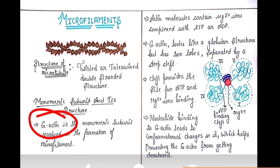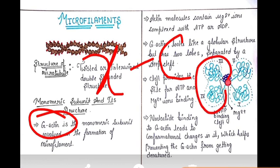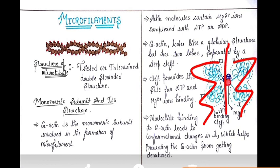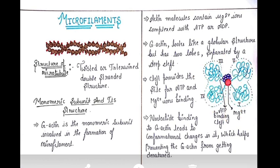If we see the G-actin structure, it shows a globular structure. But in reality, from X-ray crystallography, we have seen that G-actin is a bi-lobed structure — there are two lobes present. These lobes are divided by a deep cleft; they are not combined with each other, but differentiated with the help of this deep cleft.